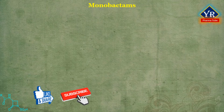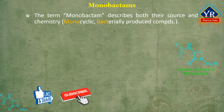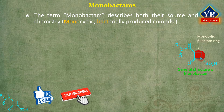With the discovery of monocyclic compounds in 1981, the trend toward the simplification of beta-lactam antibiotic structures has reached the ultimate. The term monobactam describes both their source and chemistry — mono is taken from their monocyclic structure, and bactam is taken from their source as they are bacterially produced compounds.